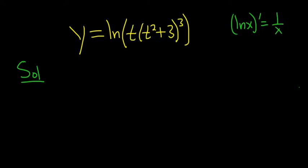If we use that formula here, it would be 1 over all of this stuff. Then we have to multiply by the derivative of all of this stuff, which is a product rule and a chain rule.